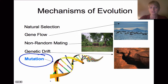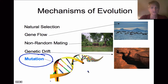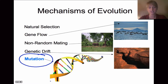Mutation is the most common form of evolution. Mutation in the genetic code causes variation in the population, and that change in variation causes changes over time — which is our definition of evolution.